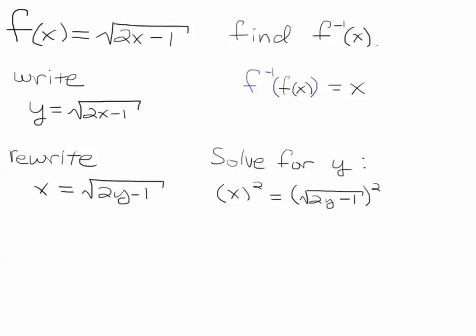So we're going to square both sides, and after we square both sides we notice that we had x squared on the left and the square root and the square are inverse operations, so we just get 2y minus 1.